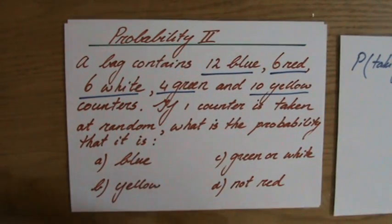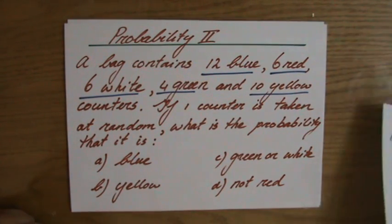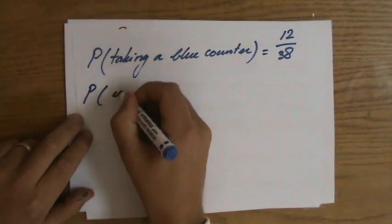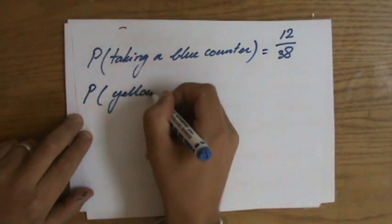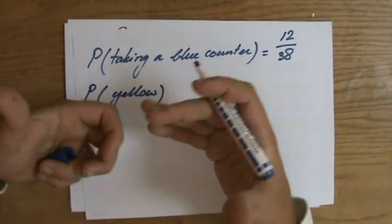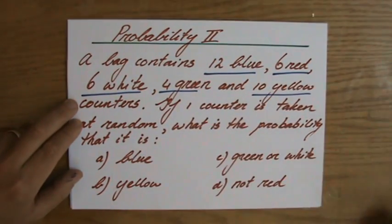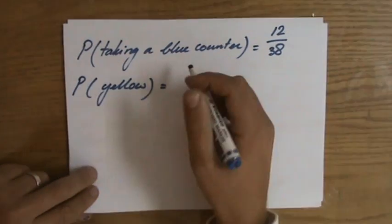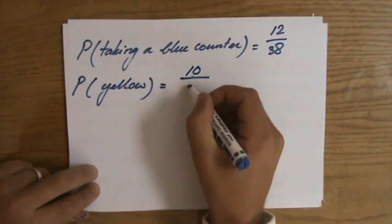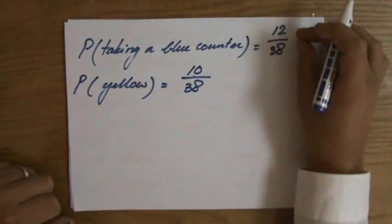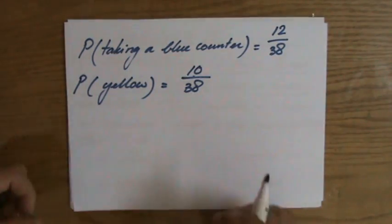Question B: What is the probability that I grab a yellow counter? I'm just gonna write down yellow inside my brackets now, which means what is the chance of getting a yellow counter. But what is the amount of successes? I have 10 successes. So 10 out of 38. Because this is a new question, that previous counter has been put back into the bag.